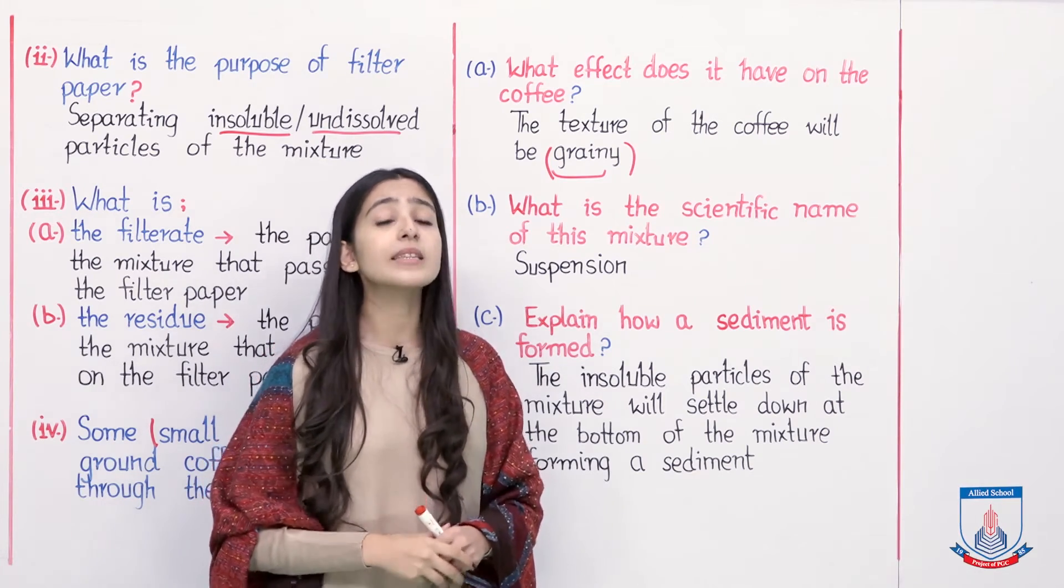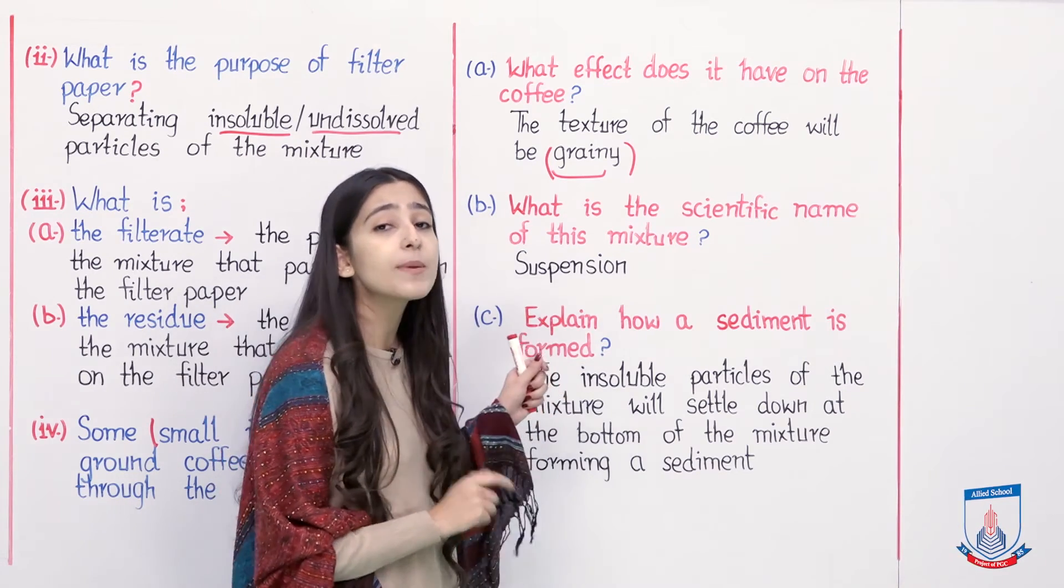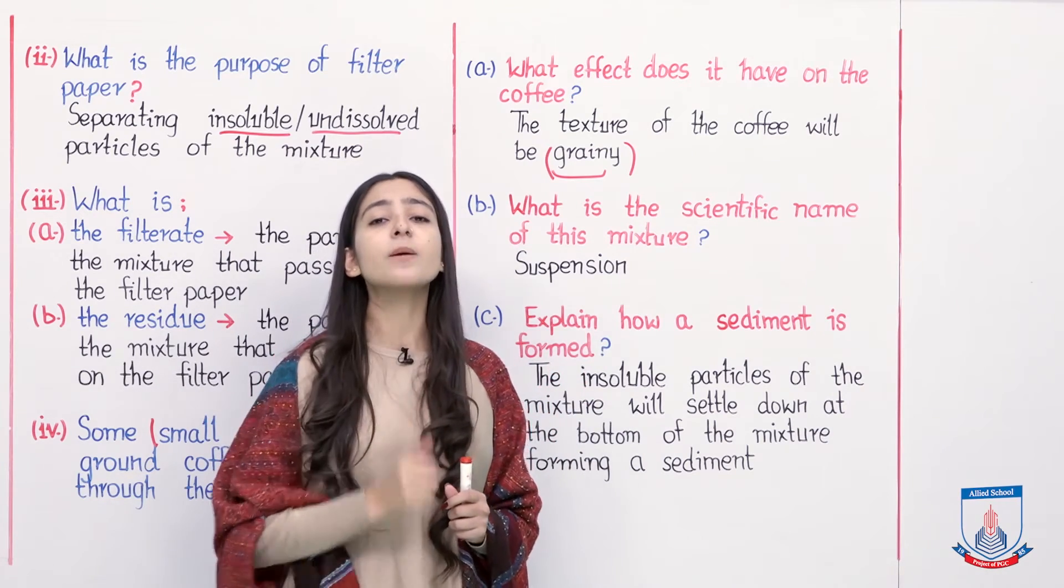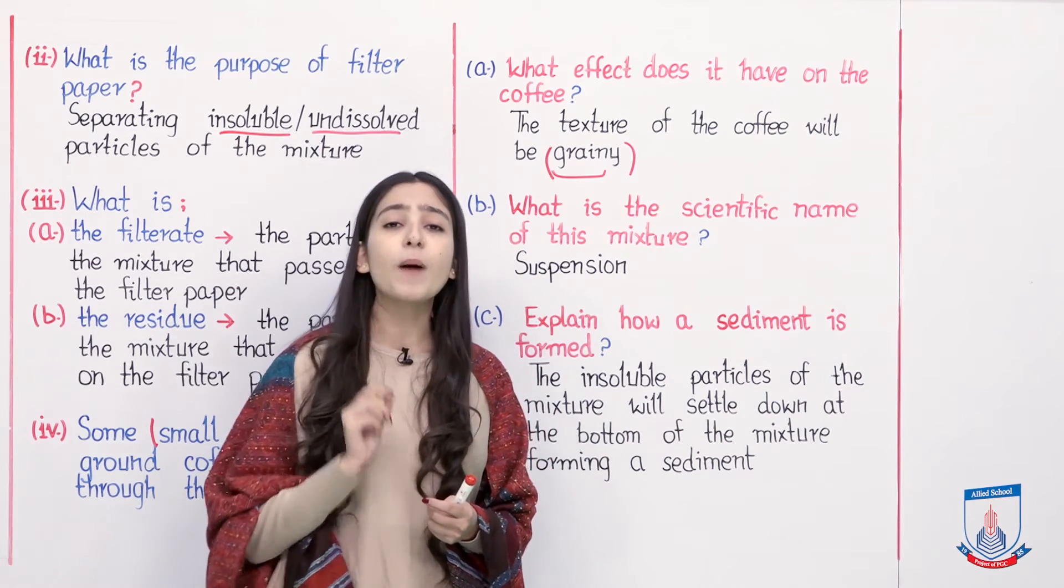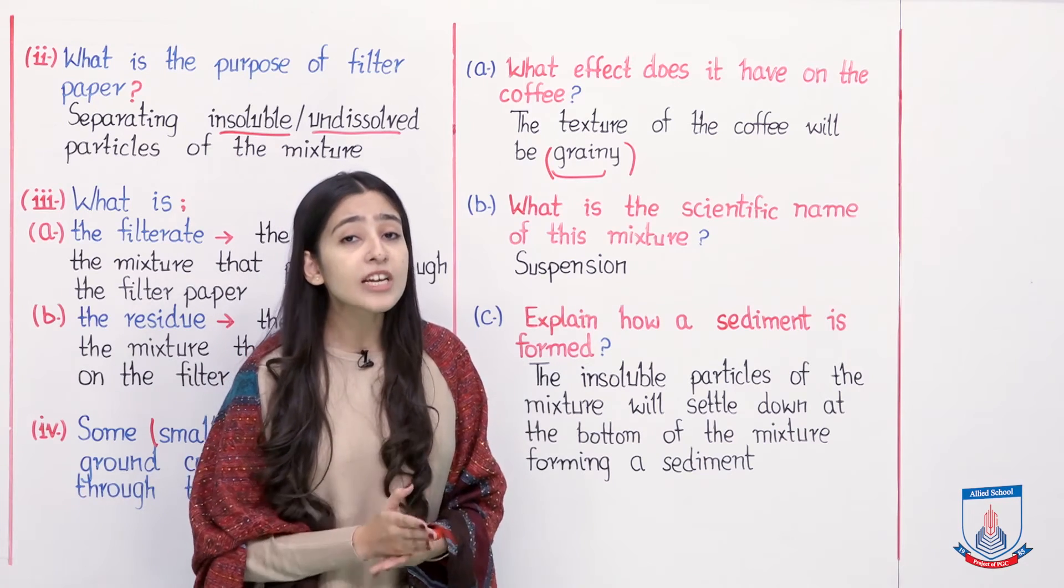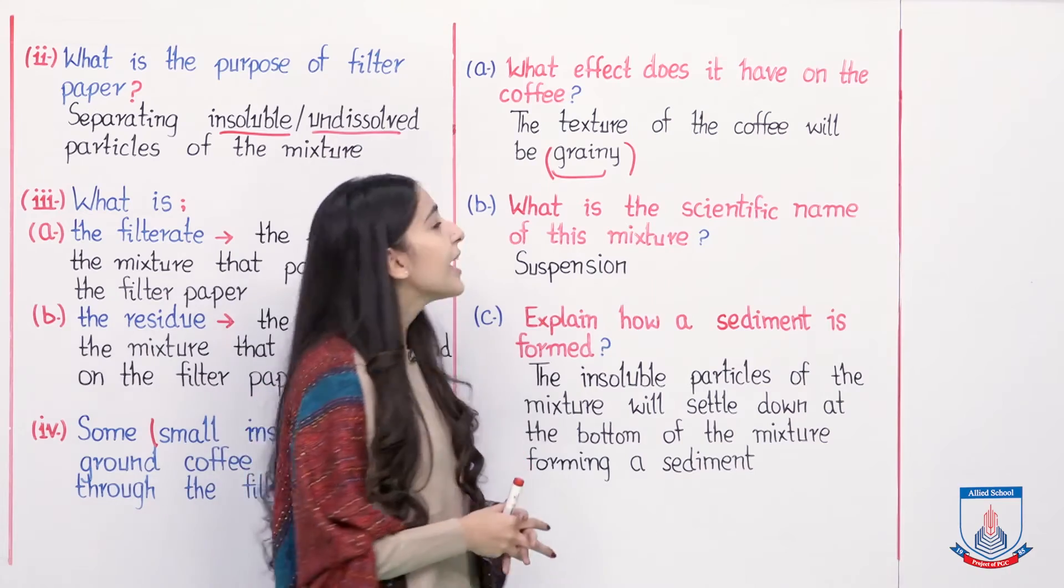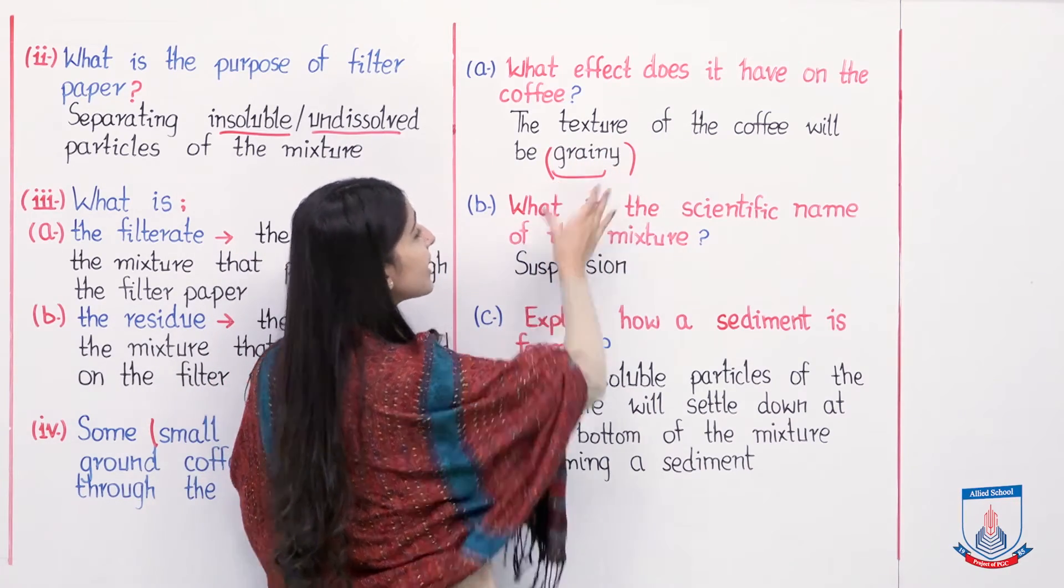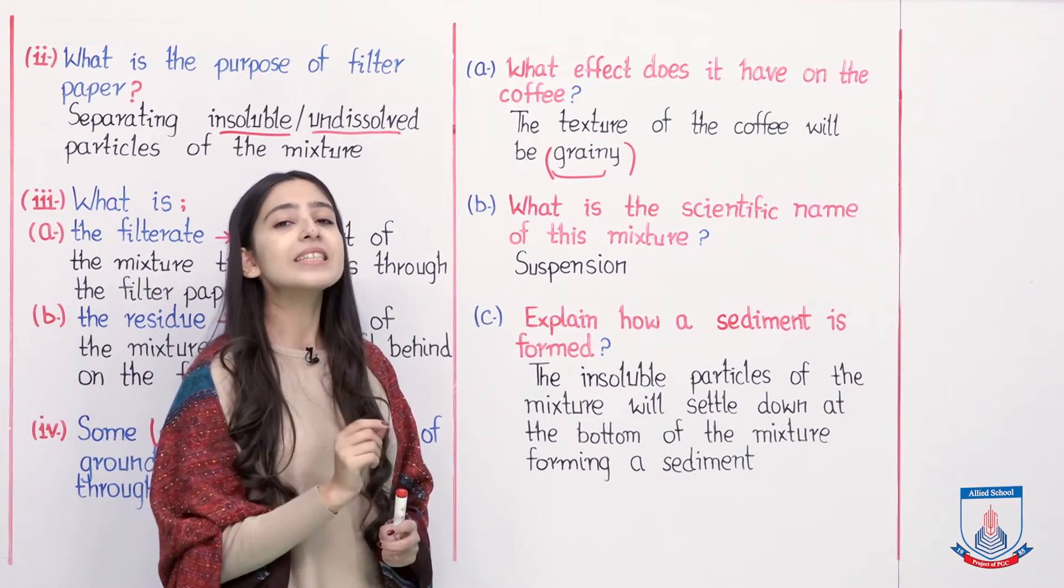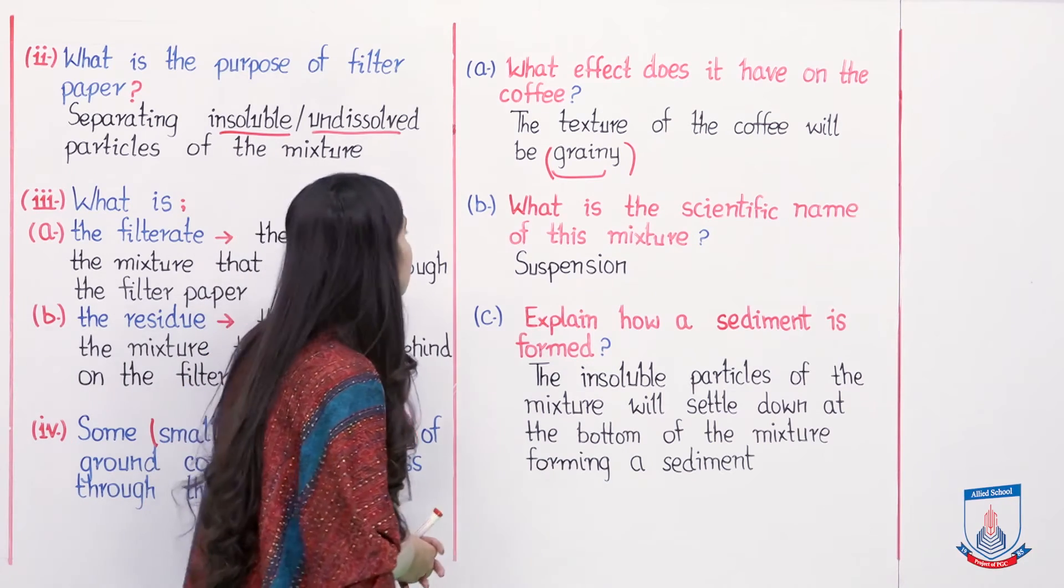The texture of our coffee will be grainy, meaning small insoluble particles will be present in the water. If we normally make coffee in the house, we grind these coffee particles very well. After that, we have smooth coffee. These small insoluble particles will remain because they are not crushed or ground properly. Therefore, the texture of coffee will be grainy, rough.